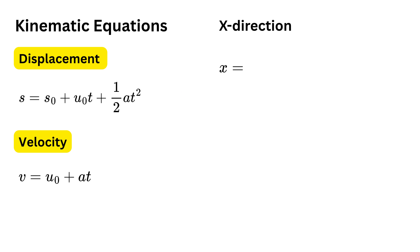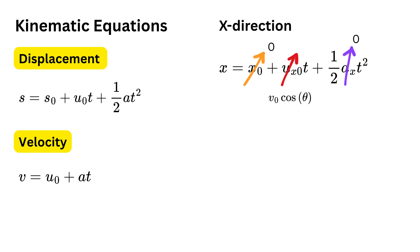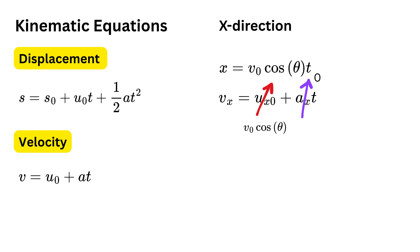For the x direction: x equals x₀ plus u_x₀ · t plus half a_x · t². Since x₀ equals 0 and a_x equals 0, this simplifies to x equals v₀ cos theta · t, where t is the total time of flight. For the horizontal velocity: v_x equals u_x₀ plus a_x · t, which gives v_x equals v₀ cos theta at any time — the horizontal velocity is constant.